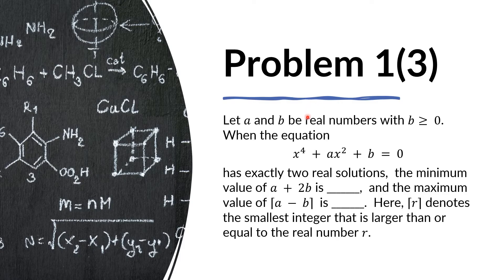The problem goes like this. Let A and B be real numbers with B greater than or equal to zero. When the equation x to the fourth plus Ax squared plus B equals zero has exactly two real solutions, the minimum value of A plus 2B is blank, and the maximum value of the ceiling of A minus B is blank. Here the ceiling of R denotes the smallest integer larger than or equal to the real number R.